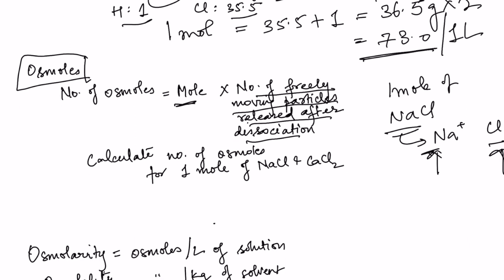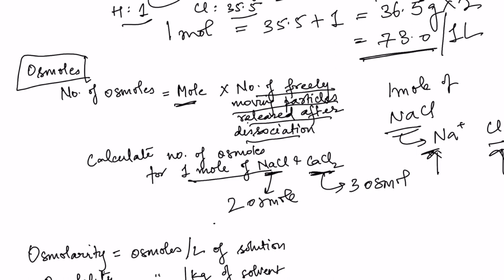Calculate the number of osmoles for 1 mole of NaCl and CaCl₂. For NaCl it will be 2 osmoles. For CaCl₂, it will dissociate into 3 particles — calcium plus 2 chloride ions — so it causes 3 osmoles. The calculation of osmoles is very simple.